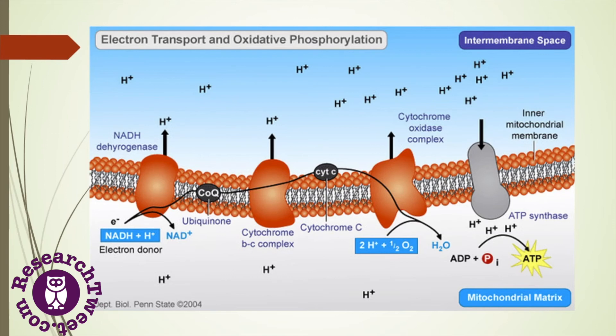In the electron transport and proton pumping step, electrons move from higher to lower energy levels, releasing energy. This energy is used to pump H+ ions from the matrix into the intermembrane space, establishing an electrochemical gradient. Then, molecular oxygen splits into two atoms of oxygen and reacts with hydrogen ions to form water.